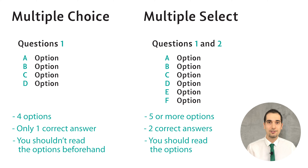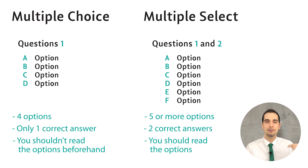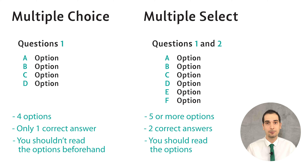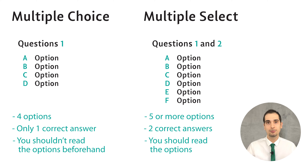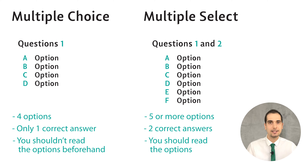Difference number three, which is the most important one: multiple choice questions are written in a way that you don't need to read the options beforehand. You only read the question, go to the passage, find the answer, come back to the options, eliminate the wrong ones, and choose the correct answer. But multiple select questions are different — if you don't read all five options beforehand, you can't find the answer in the passage.